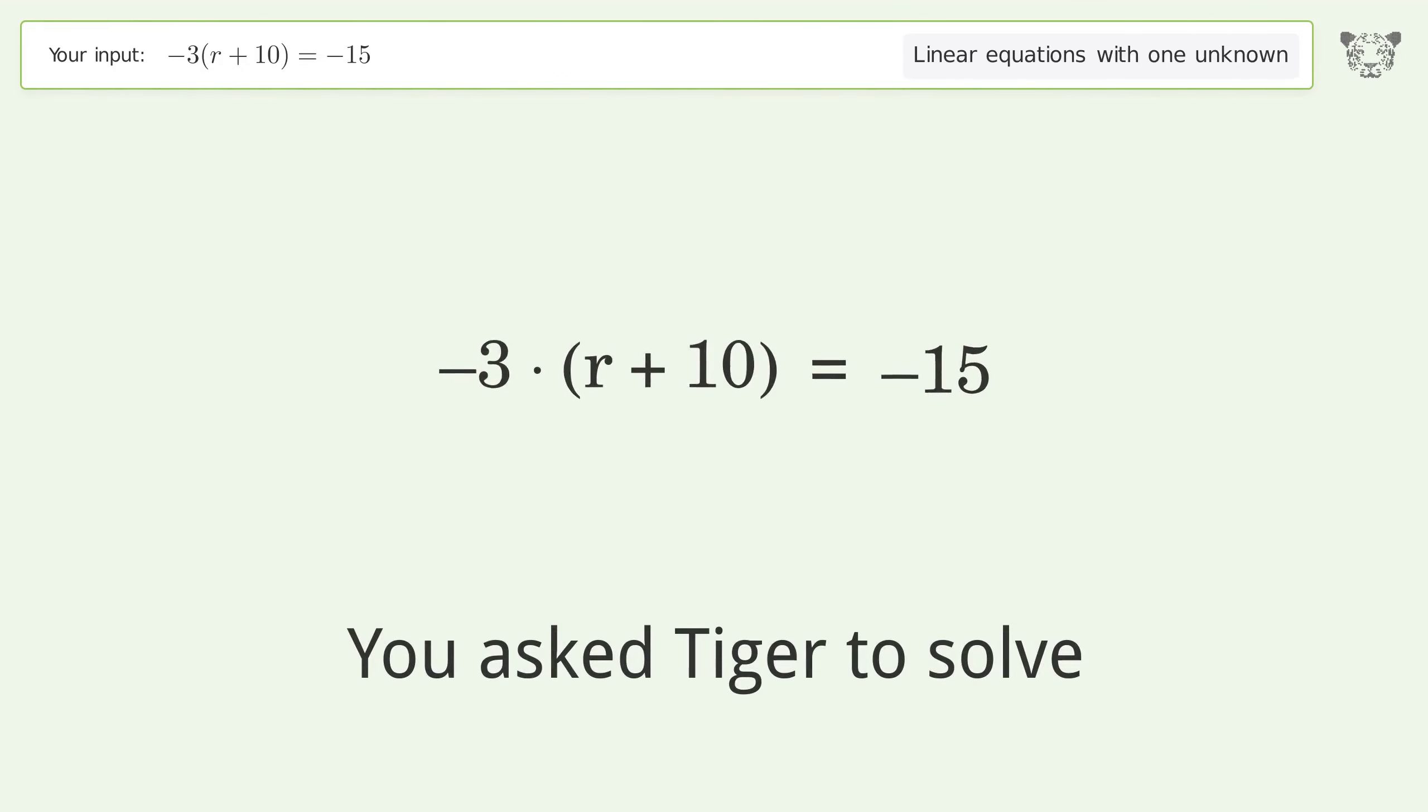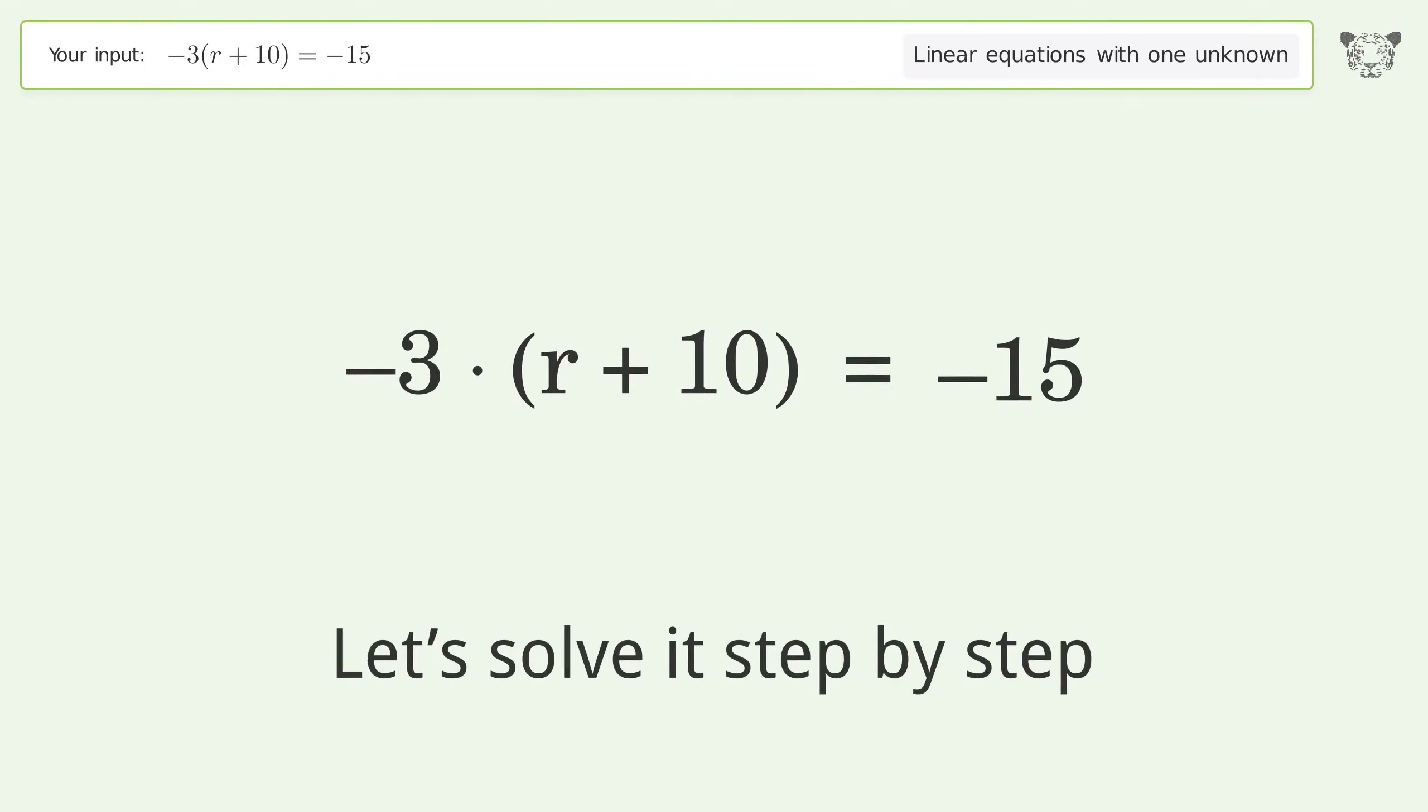You asked Tiger to solve this. This deals with linear equations with one unknown. The final result is r equals negative 5. Let's solve it step by step. Simplify the expression.